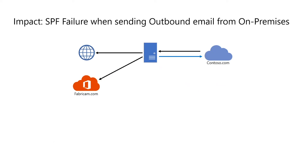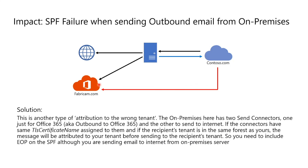The last scenario is SPF failure when sending outbound email from on-premises. If on-premises has two send connectors — one for Office 365, also known as outbound to Office 365, and the other to send mail to the internet — you might encounter SPF failures when sending to domains hosted in clouds. This is another type of attribution to wrong tenant problem. If the two send connectors from on-premises have the same TLS certificate name, the message will be attributed to your tenant before sending to the recipient tenant. So you need to include EOP on your SPF. This is the reason why we always recommend including spf.protection.outlook.com on your domain's SPF record, even if you are sending email to the internet directly from your on-premise server.